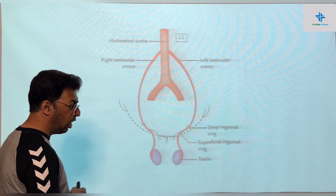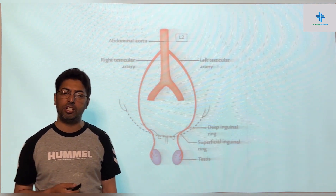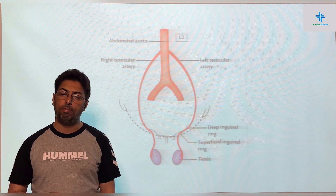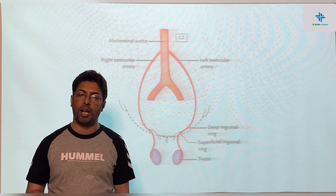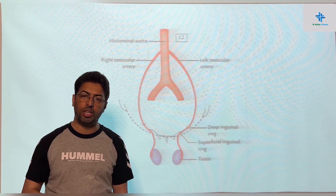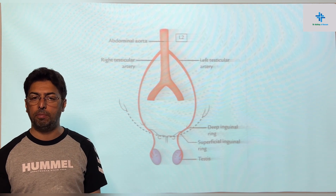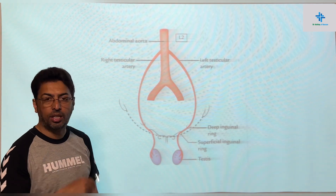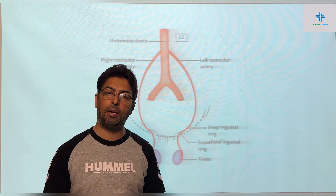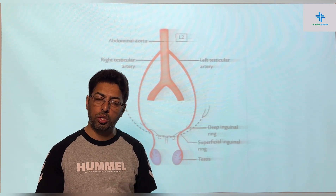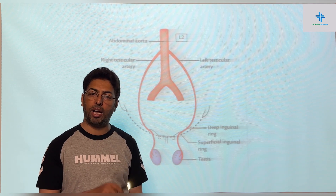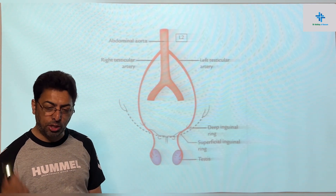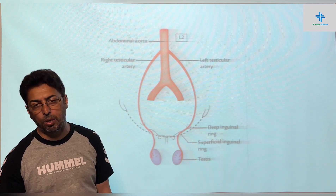As far as the arterial supply of the testis is concerned, you have to remember the gonadal arteries — testicular arteries in males and ovarian arteries in females. These gonadal arteries are derived as lateral branches of the abdominal aorta. The aorta has three anterior branches: the celiac trunk, the superior mesenteric artery, and the inferior mesenteric artery. The testicular arteries arise at the level of L2 as lateral branches of the abdominal aorta, one on the right side and one on the left.